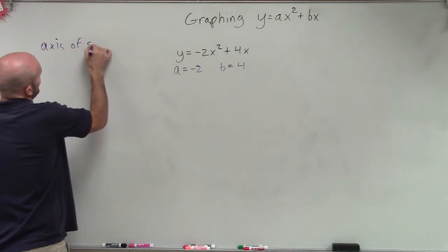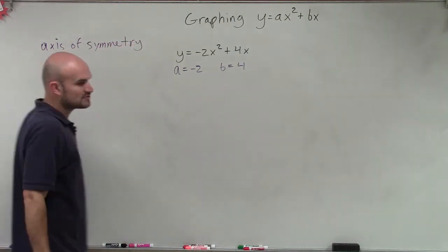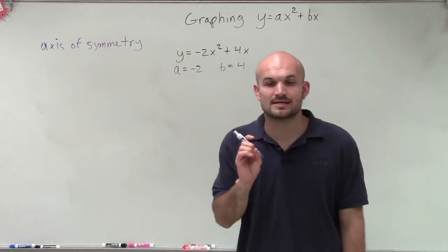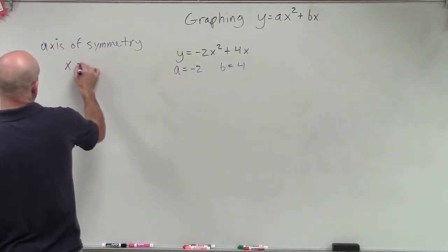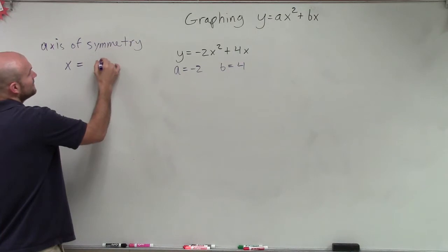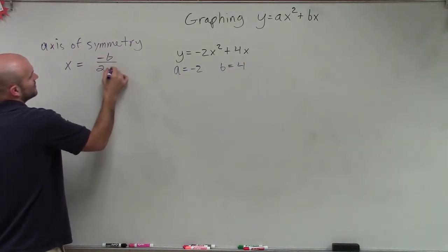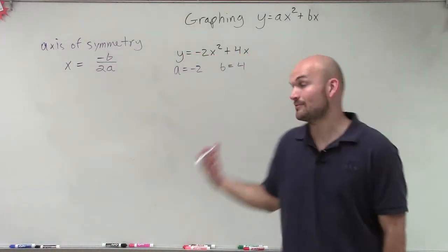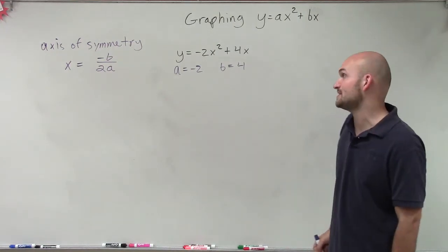There is a formula for finding the axis of symmetry. The axis of symmetry is a vertical line, so we say x equals the opposite of b divided by 2a. To find our axis of symmetry, we don't need to look at the graph — we just take the opposite of b divided by 2a.